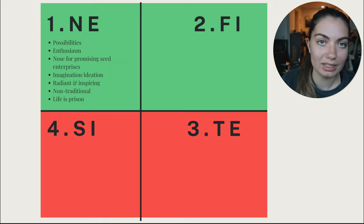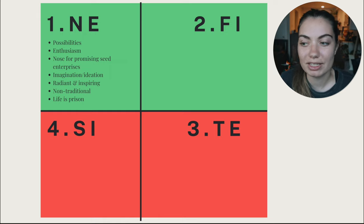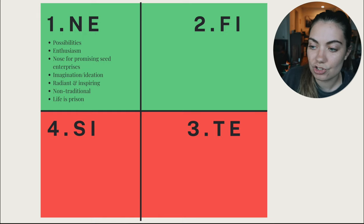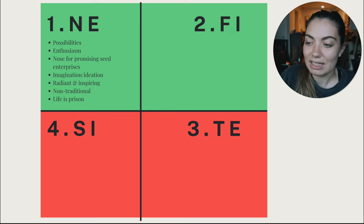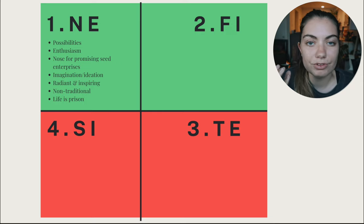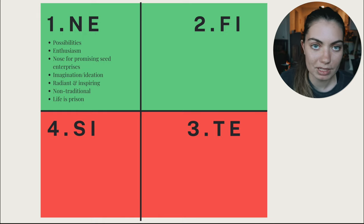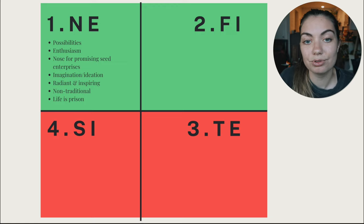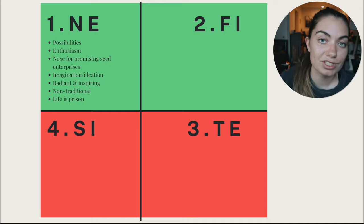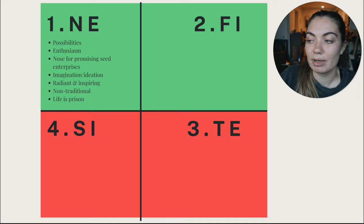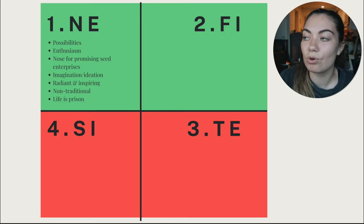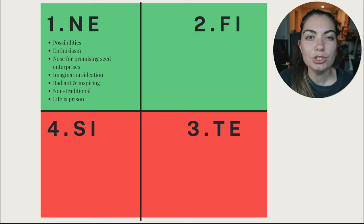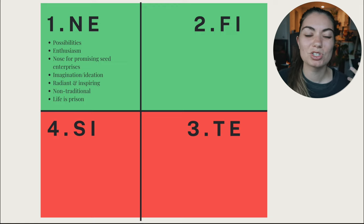The ENFP's first function is extroverted intuition, abbreviated Ne. The number one word for extroverted intuition is possibilities. ENFPs are so good at seeing possibilities, new ideas, ideation, brainstorming, imagining. They have a radiant and inspiring enthusiasm and a nose for the seed of future promise. They're so good at inspiring people to try new things. The Ne doms I've known were the first ones to come visit me in a new city.